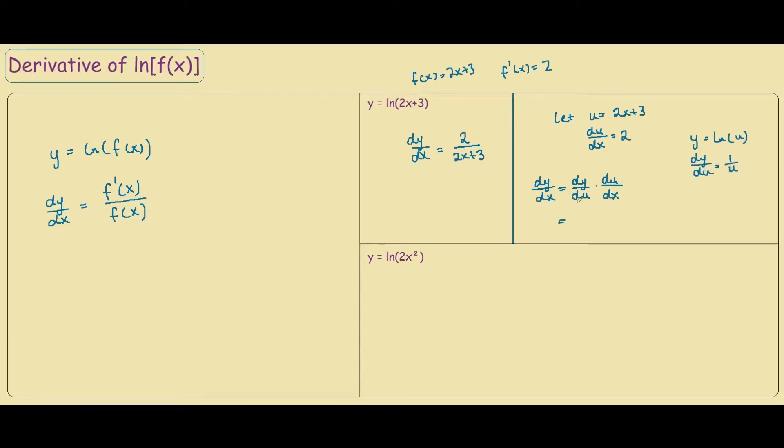Then from our chain rule, if we substitute this one, we have 1 over u times du/dx, which is 2. So this will give us 2 over u, which is basically the same thing as what we had before, which is 2 over 2x plus 3.